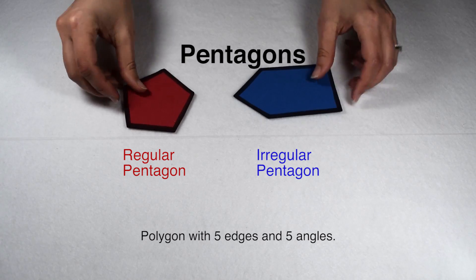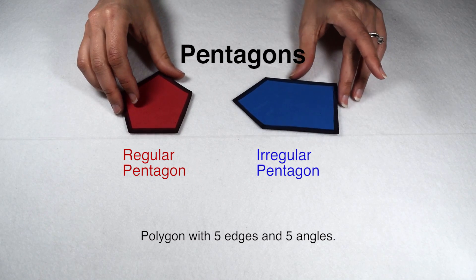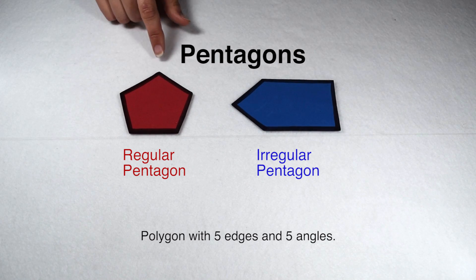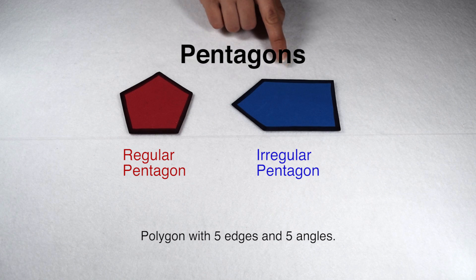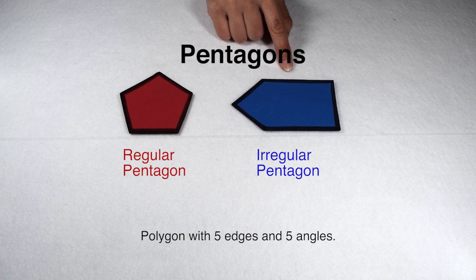Pentagons have five sides and five angles. The building in Washington is probably the pentagon you're most familiar with — that would be our five-sided regular pentagon because of its equal sides and equal angles. Other five-sided pentagons would most likely be classified as irregular because they have different sides, different angles, or both.